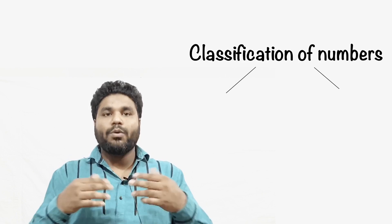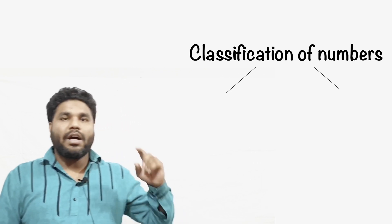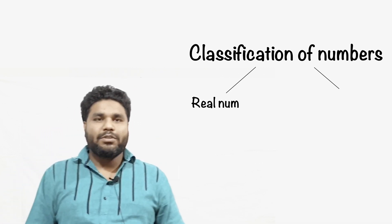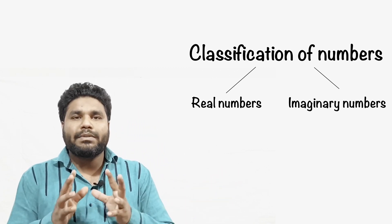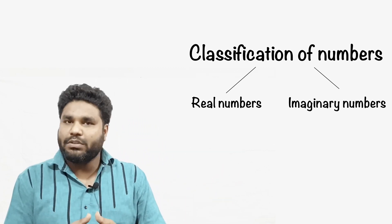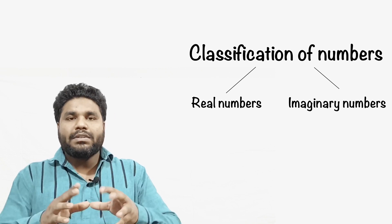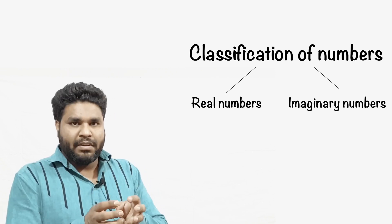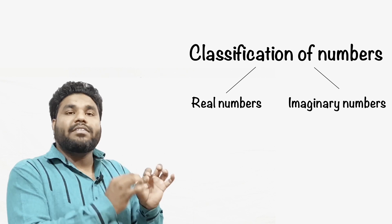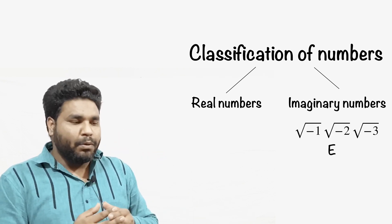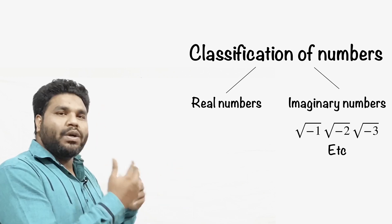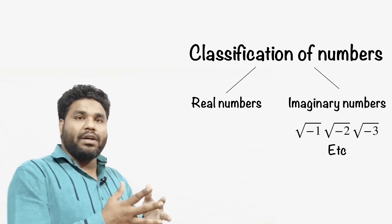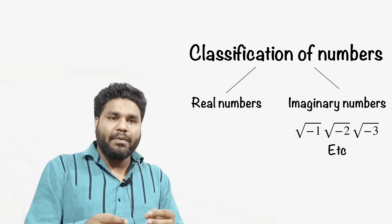Numbers are classified into two main parts. The first part is real numbers and the second part is imaginary numbers. Imaginary numbers are those numbers which are negative and under a square root — for example: √(−1), √(−2), √(−3), √(−4). Any number that is negative and under a square root is called an imaginary number.